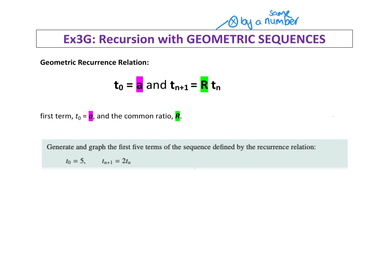When we have a geometric recurrence relation, we have the initial value, that's A. That's always the initial amount - I say initial, but it could be original or starting value.